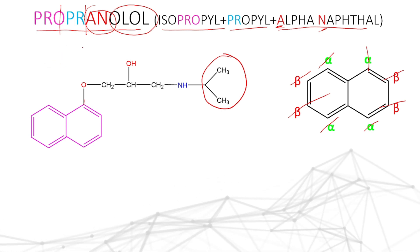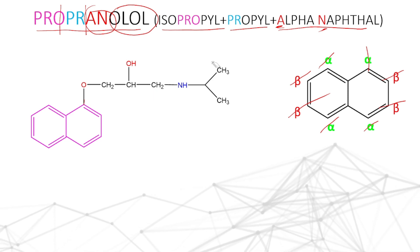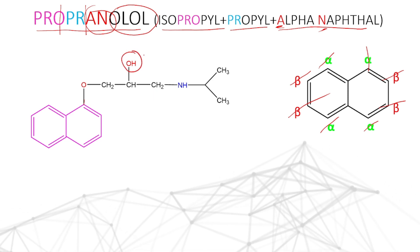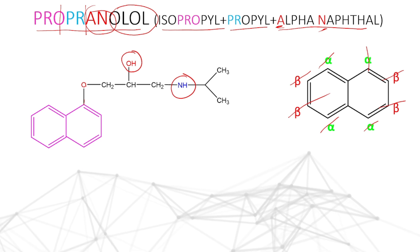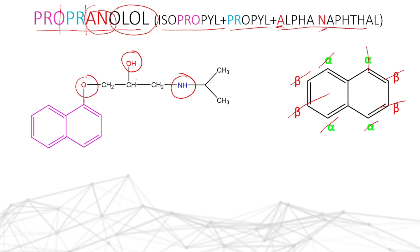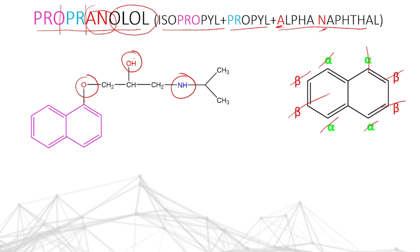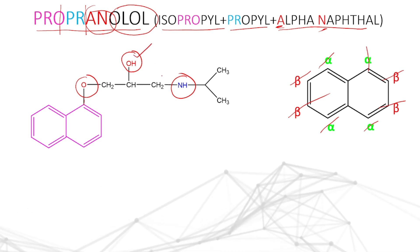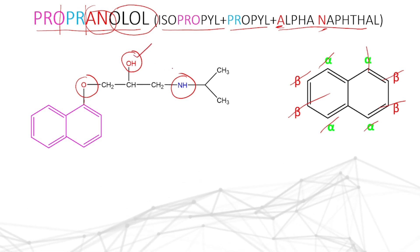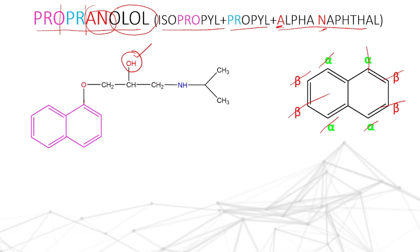Next comes the IUPAC nomenclature. First, we need to identify the functional groups. Alcohol group is there, amine group is there, ether group is there. Among alcohol, amine, and ether groups, alcohol group gets more priority as per the functional group priority. So we can neglect the amine and ether group.